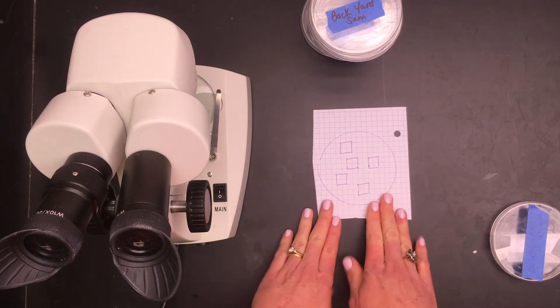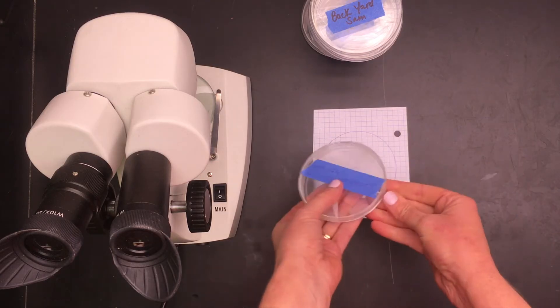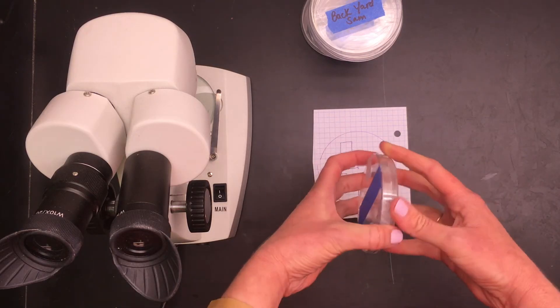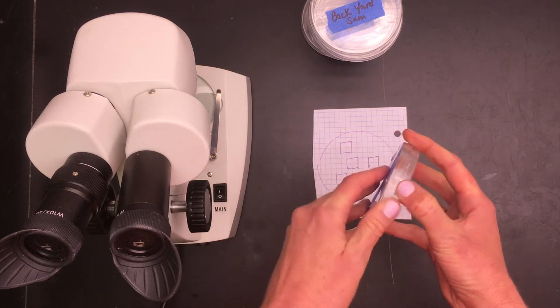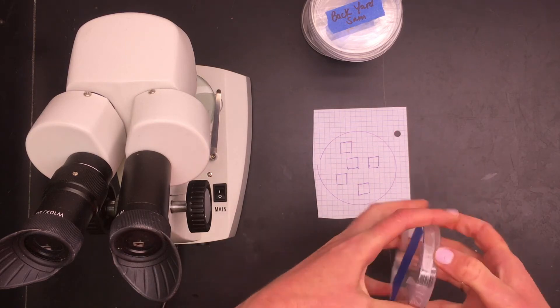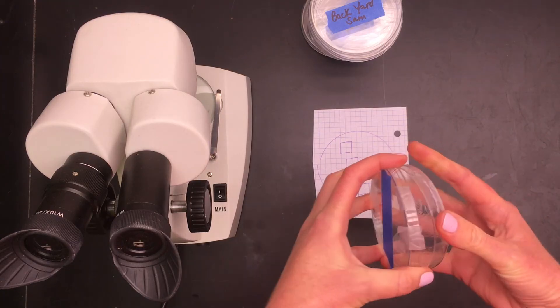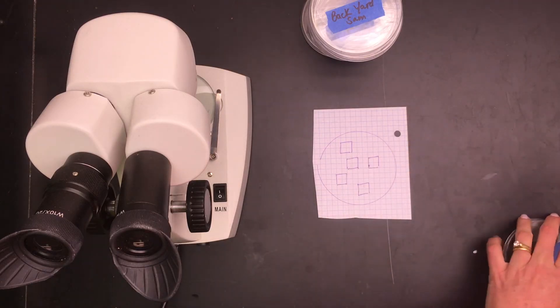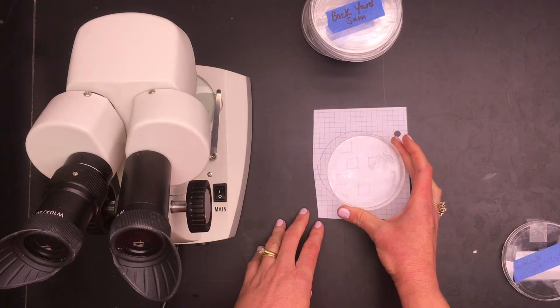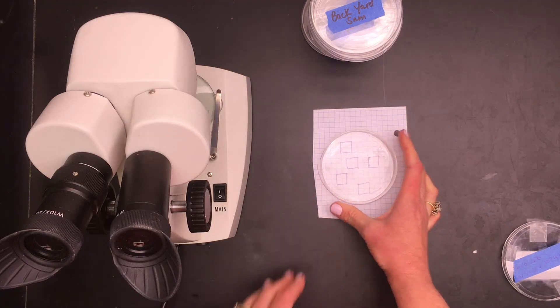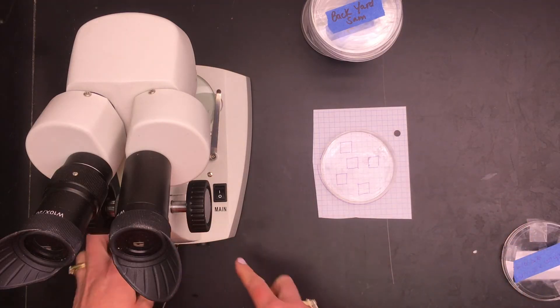So you only need one template. Then when you get back to lab, you're gonna unpeel the tape. You can use some scissors if you need to to get the tape off. And now you're going to count your particulates.